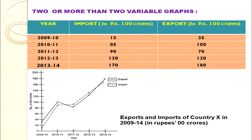Now we discuss the two-variable graph. In this graph there are two variables: import and export. To distinguish between the two lines, either use colour pencils or draw one as a dotted line. On the y-axis we have plotted imports and exports; on the x-axis we have labelled year. Always label the diagram first, then draw it — first draw import for the years, then export.